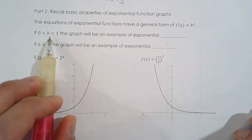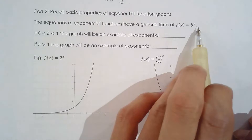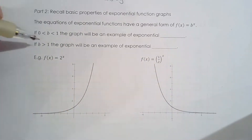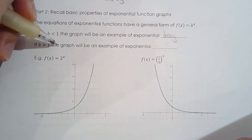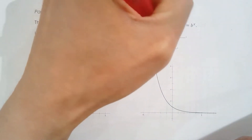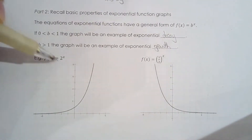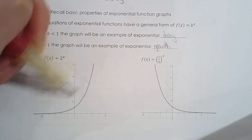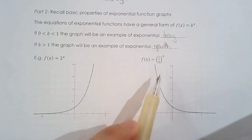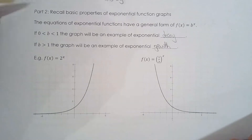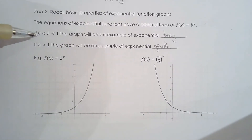If you know the value of b in f(x) = b^x, you can tell whether it's exponential growth or decay. If b is between zero and one, the graph is exponential decay. If b is greater than one, the graph is exponential growth. For example, 2^x has b greater than one, so it's exponential growth, and (1/2)^x has b = 1/2, so it's exponential decay.